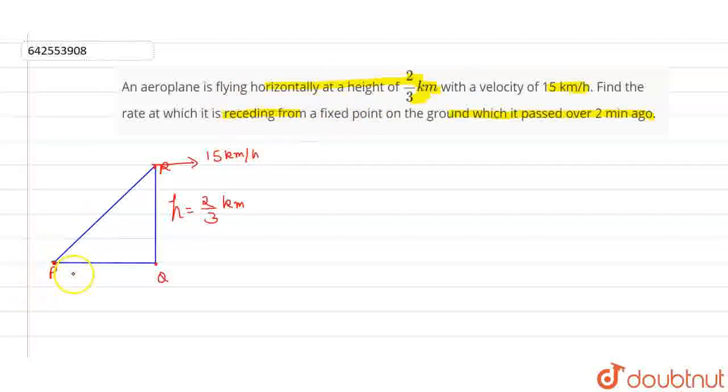2 minutes before, we have to find the rate at which it is receding from a fixed point. So from this fixed point, firstly we have to find the distance it is traveling horizontally 2 minutes before.